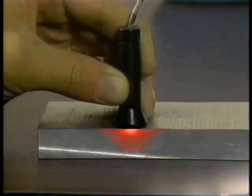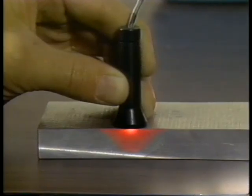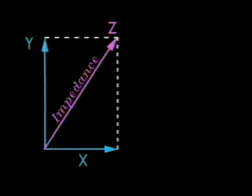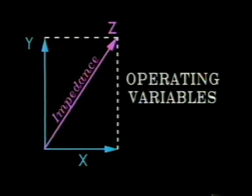As we have seen, the eddy current technique depends on the generation of induced currents within the test object. Perturbations or disturbances in these small induced currents affect the test coil. The result is variance of test coil impedance due to test object variables. These are called operating variables.